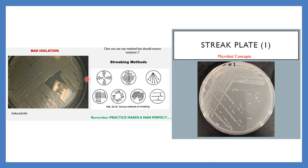Two parts of the streak plate method are already uploaded on my channel — check it out. Comparing a bad isolation plate with a good one: in the bad plate using the four-quadrant technique there is no isolation and you can see a lot of bacterial growth along the streak marks. In the good plate, isolated colonies are clearly visible. Various streaking methods are available and you should use the one you are confident with for achieving isolation.